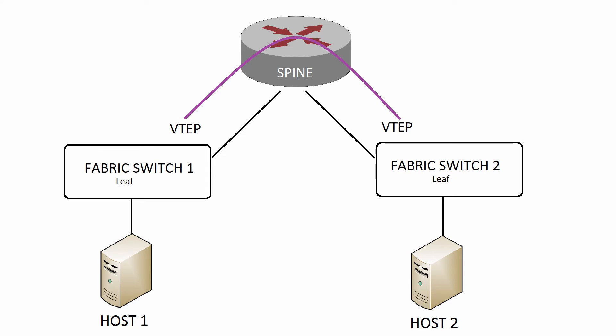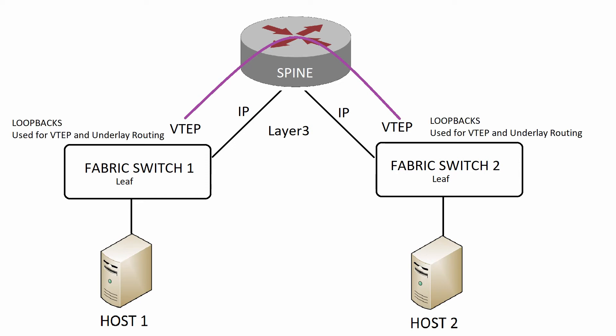The VXLAN processing all happens on the leaf switches. The spine doesn't actually need to know anything about VXLAN — though that's only if you don't use VXLAN on the spine. We need to put some initial configuration in place before we can use VXLAN: IP address the uplinks, introduce loopback addresses on the devices, and ensure routing across all of that IP addressing using OSPF or even static routes, which will create our underlay network.